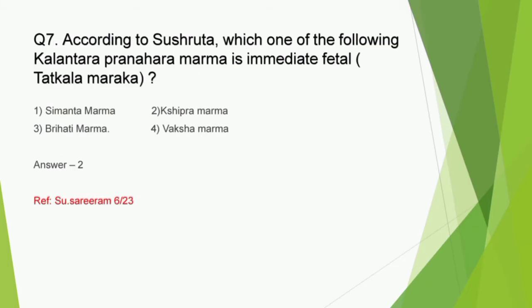Question number 7: According to Sushruta, which one of the following Kalandhara Pranahara Marma is immediately fatal - Simanta, Kshipra, Brihati, or Vaksha? The correct answer is option 2, Kshipra Marma. Sushruta Acharya in Pratieka Marma Nirdeshashariram has mentioned that though Kalandhara Pranahara Marma kills a person within a time span of 15 days or 1 month, this Kshipra Marma among the Kalandhara Pranahara Marma can sometimes cause immediate death.